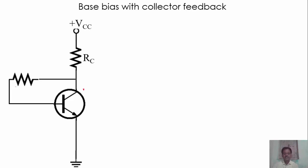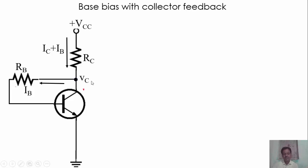This is RC, the collector resistance, and the current through this resistance is IC plus IB — both currents are flowing through this same resistance. This is the base resistance RB, and the current through this resistance is IB. The point where we connect the base resistance RB is known as VC, the collector voltage. The current into the transistor is IC, and the voltage between base and emitter is VBE.